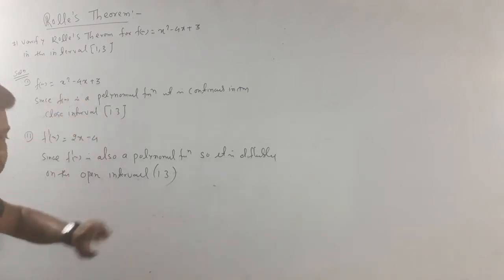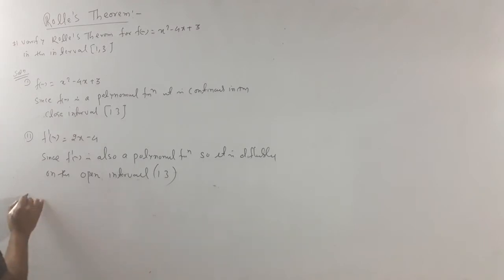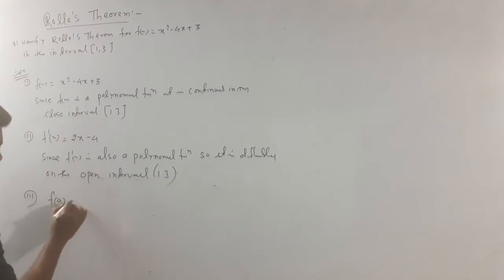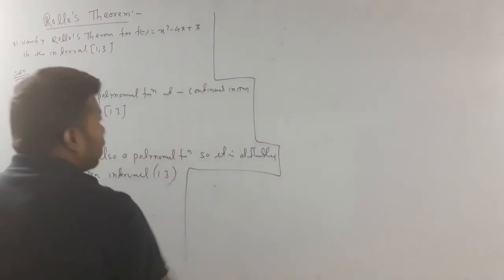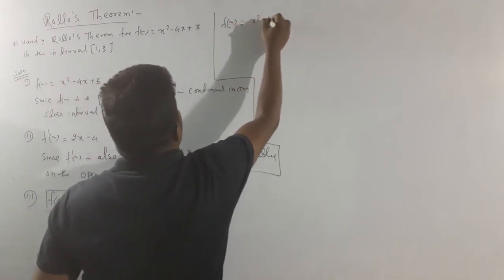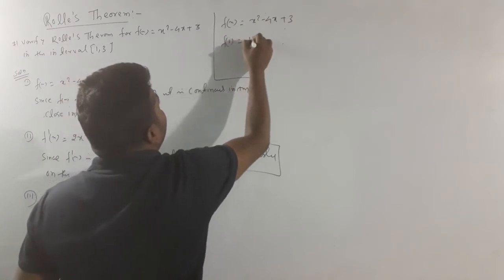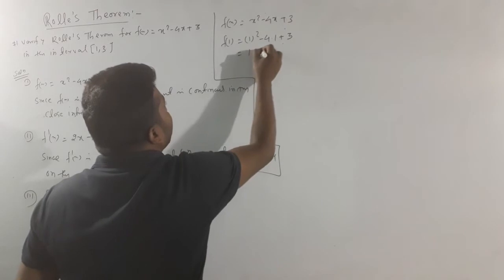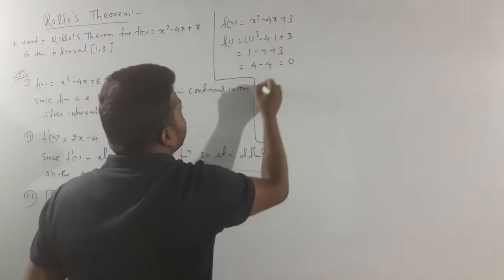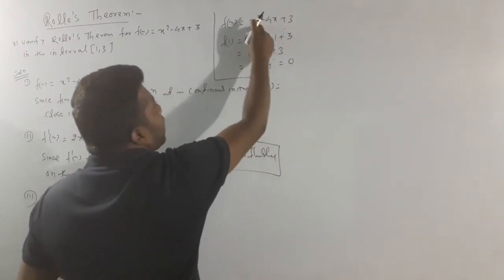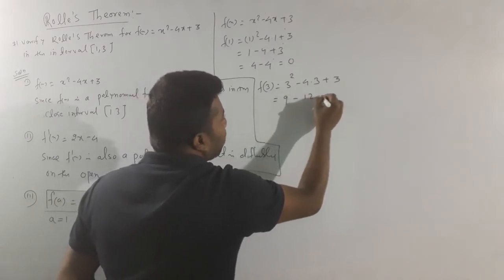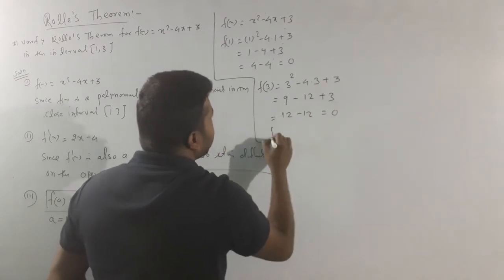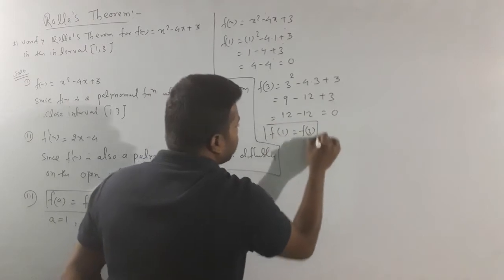Step 1 checks the closed interval; step 2 checks the open interval. Step 3: check f of a equal to f of b. Here a equals 1 and b equals 3. f of x equals x squared minus 4x plus 3. f of 1 equals 1 minus 4 plus 3 equals 0. f of 3 equals 9 minus 12 plus 3 equals 0. Therefore f of 1 equals f of 3. All three conditions are satisfied.